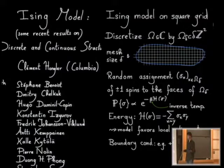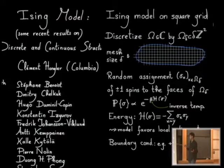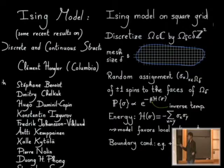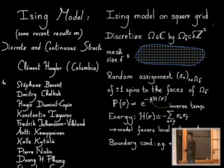The probability of a spin configuration is prescribed by its Boltzmann weight, exponential of minus beta times the energy, where beta is a positive parameter — the inverse temperature. The energy is minus the sum over all pairs of adjacent faces of the product of the spins at those endpoints. This favors lower energy configurations, which are configurations with local alignment of spins. If two adjacent spins are the same, their contribution to the energy is minus one; if different, plus one. How much you favor local alignment is tuned by the parameter beta.